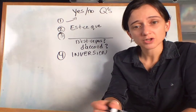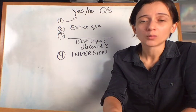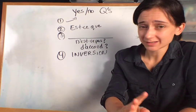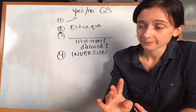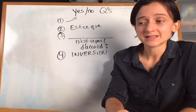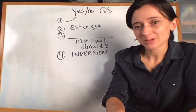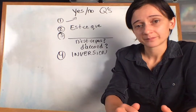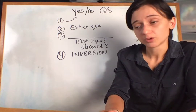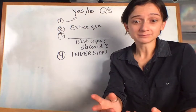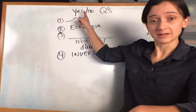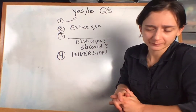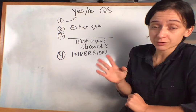Bonjour! Today we're going to talk about making yes or no questions. There are really just four easy ways to do this. The first way is by far the easiest — all you have to do is just change the pitch of your voice. So instead of 'Elle aime la pizza' (she likes pizza), you say 'Elle aime la pizza?' and you go up at the end, and it becomes a question. That's the first way to make a yes or no question.